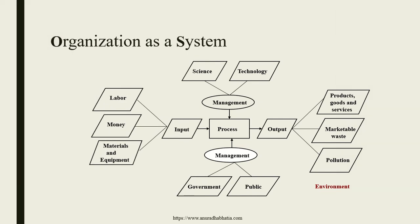An important concept is the organization as a system — how MIS helps to improve an organizational structure or organizational output. The whole environment has a process in between: management, input, and output. Management can be science and technology, or government and public. Input can come from labor, money, materials, and equipment. Output can be products, goods, services, marketable waste, pollution, and many other things. This is just an overview.